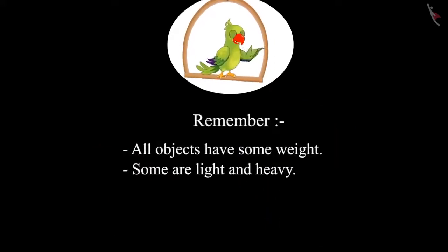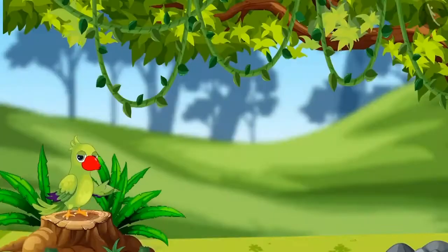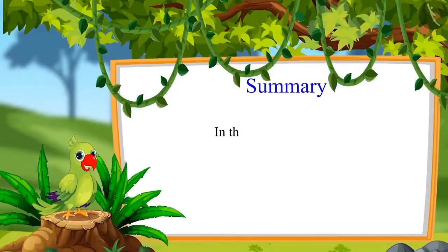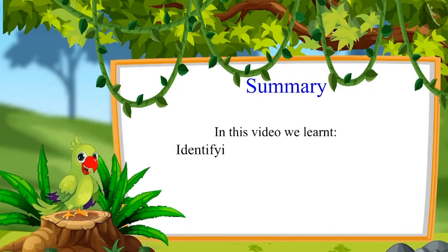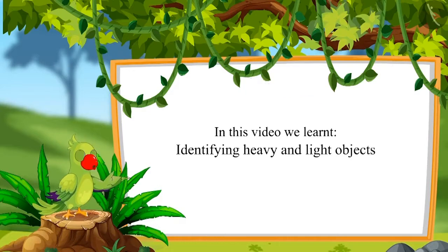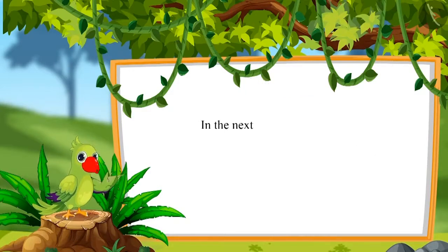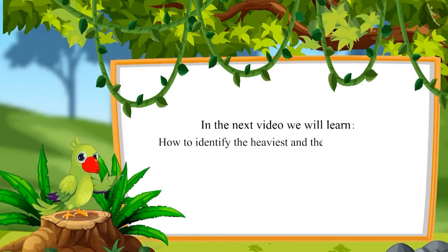This means all objects have some weight — some are light and some are heavy. That was all for today. In this video, we learned to identify heavy and light objects. In the next video, we will learn how to identify the heaviest and the lightest objects.